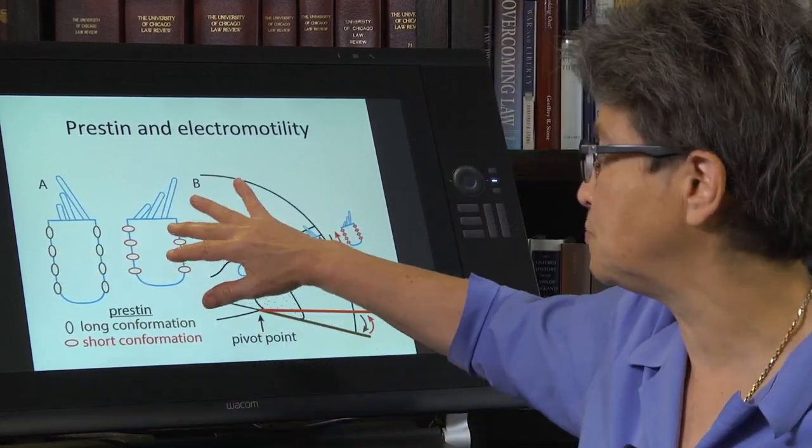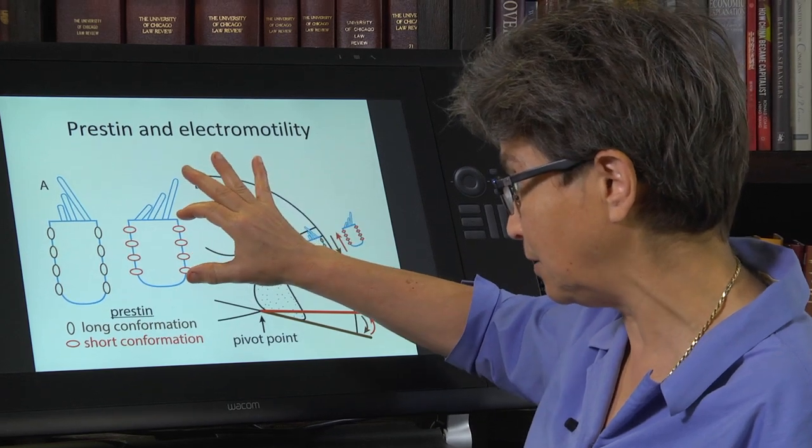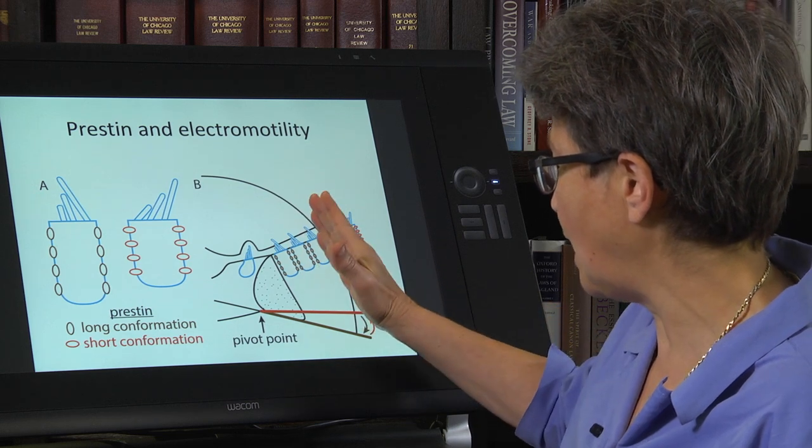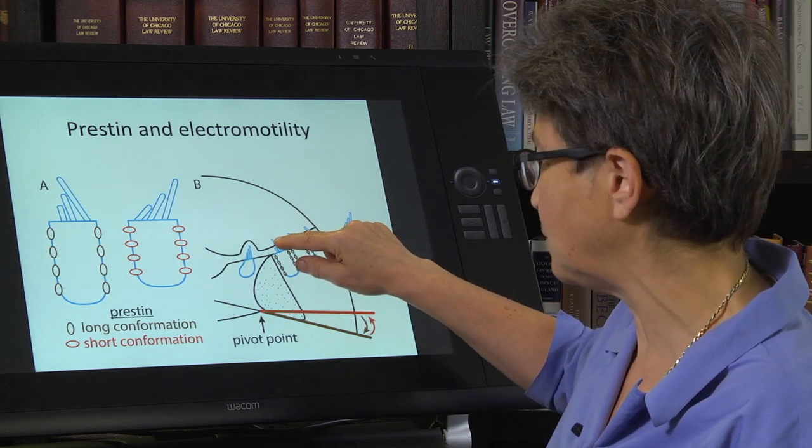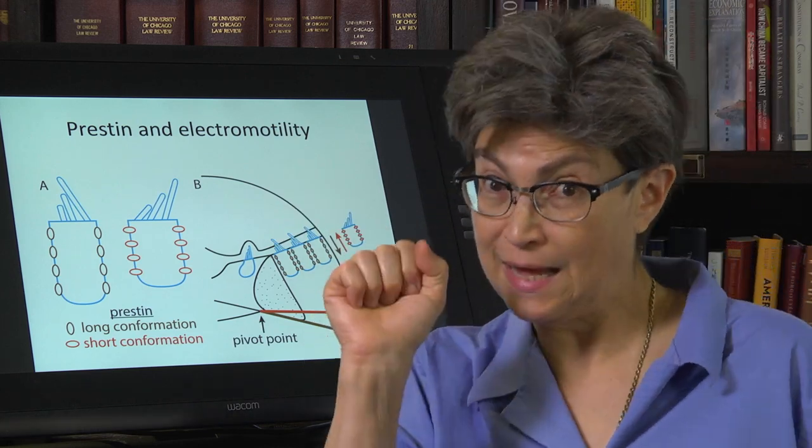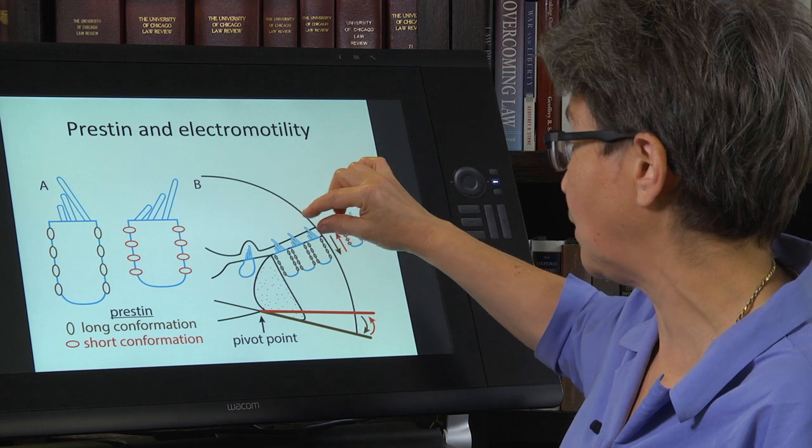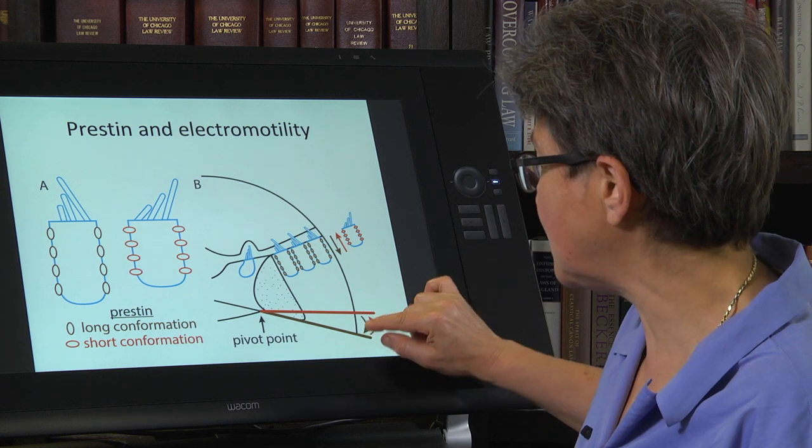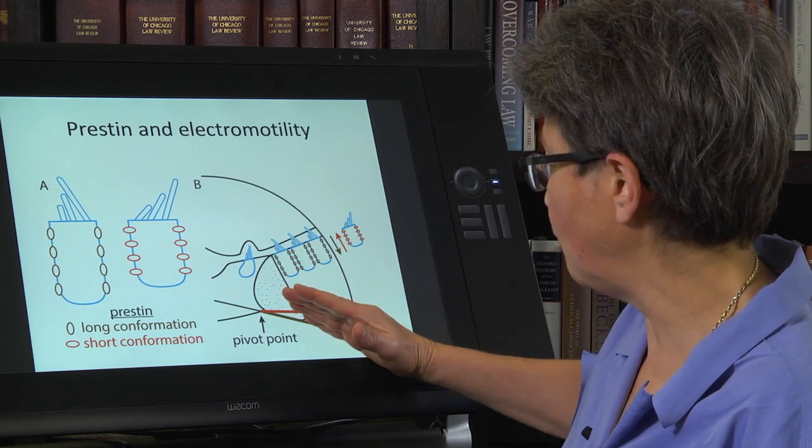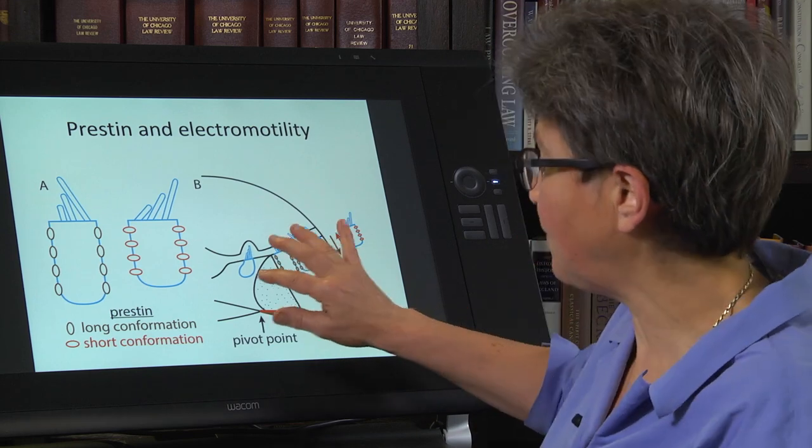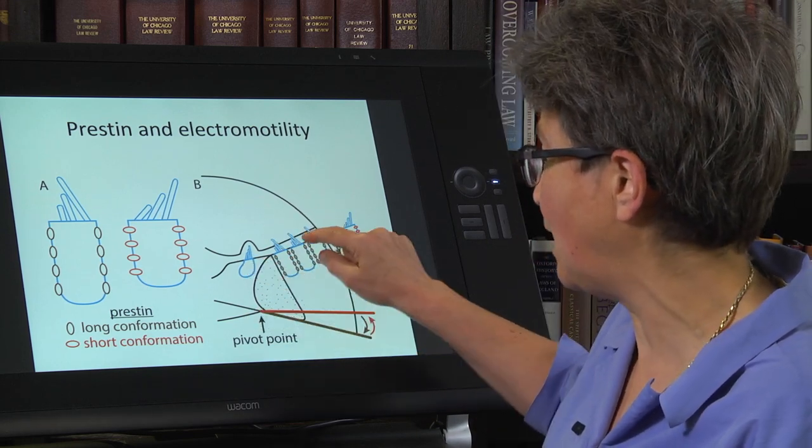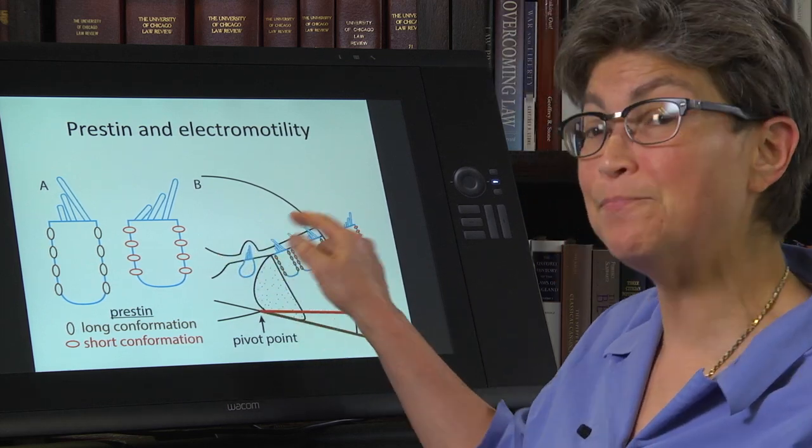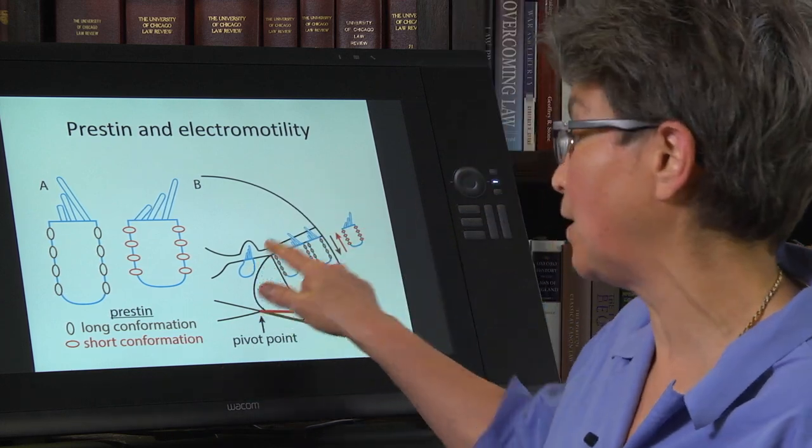So what happens as this hair cell shortens and lengthens? Remember that the outer hair cells are on the outer part of the cochlear duct, and their stereocilia, their hair bundle, is attached to the tectorial membrane. So they're attached up here. As they shorten and lengthen, they essentially pull up on this membrane, which has a direct effect on this cell and also changes the fluid as it flows through here. It provides the stimulus for the inner hair cell.